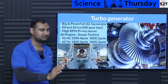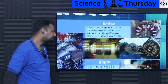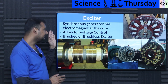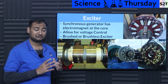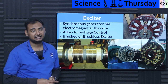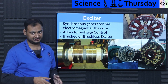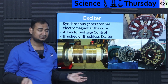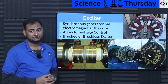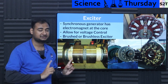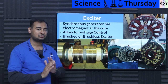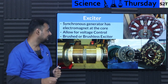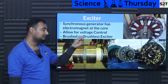Because these are synchronous generators, they require an electromagnet at the core. Can we replace that with a permanent magnet? Yes, but if you do that, you lose voltage control — the voltage is no longer adjustable. So you have to use an electromagnet. Being synchronous means RPM directly translates to frequency, with no sloppiness like in induction machines. Synchronous gives you frequency lock; the electromagnet gives you voltage control.